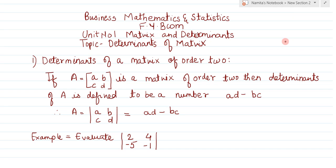In this video, I will be teaching you determinants of a matrix of order 2. This means the determinants of a matrix of order 2 has 2 rows and 2 columns, so the order is 2 by 2.